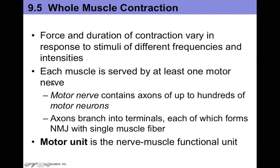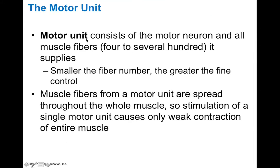Each muscle is served by at least one motor nerve. Motor nerves contain axons of up to hundreds of different motor neurons, and these axons can branch into terminals, each of which forms a neuromuscular junction with single muscle fibers. Motor units are the nerve-to-muscle functional unit — a motor neuron and all the muscle fibers that it supplies. The smaller the fiber number, the greater the fine control and the weaker the contraction produced. Larger motor units have larger fiber numbers and gross motor control.